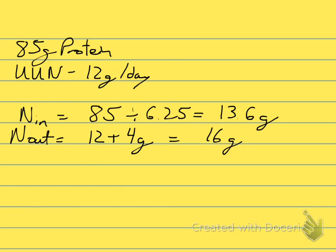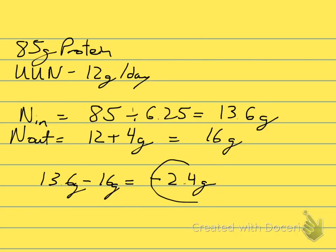So if we look at the nitrogen balance for this individual, we have 13.6 minus 16, so the nitrogen balance is going to be negative 2.4 grams. All these units are grams. So this person is losing or using more nitrogen — more protein — than they're taking in. They're in negative nitrogen balance, which is not a good place to be. Thanks for watching. Have a great day.